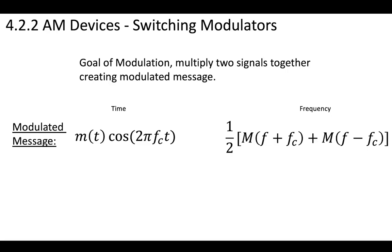With that being said, let's start by thinking about modulation again. Remember, the goal of modulation is to multiply two signals together. You want to multiply your message that has the baseband with some carrier frequency — this is the cosine wave 2π·fc·t. When you do that, you will move the message in the frequency domain to plus or minus fc.